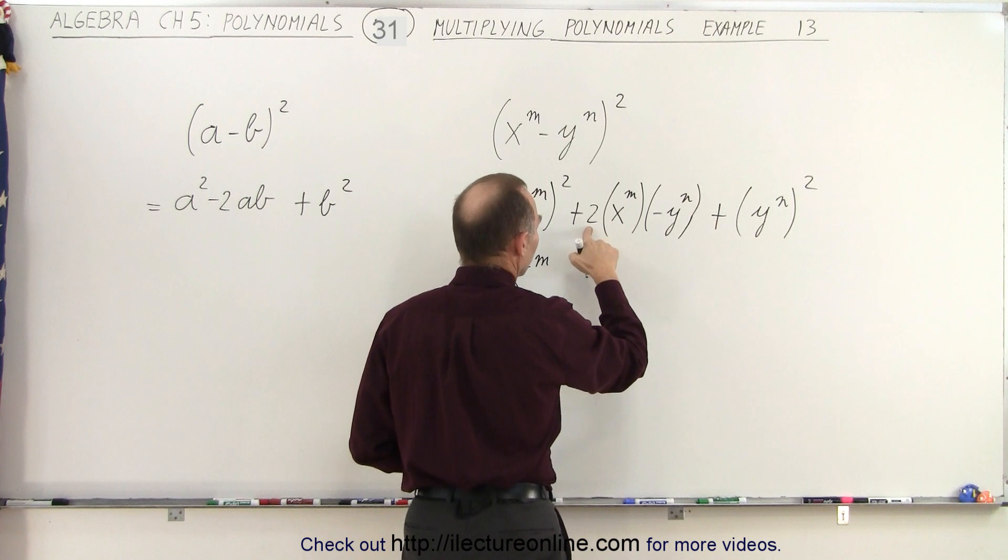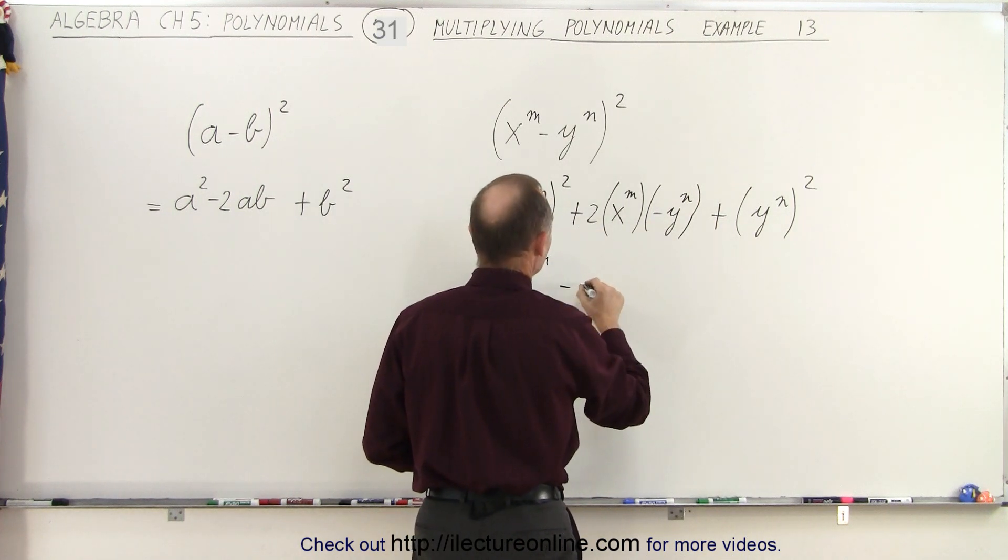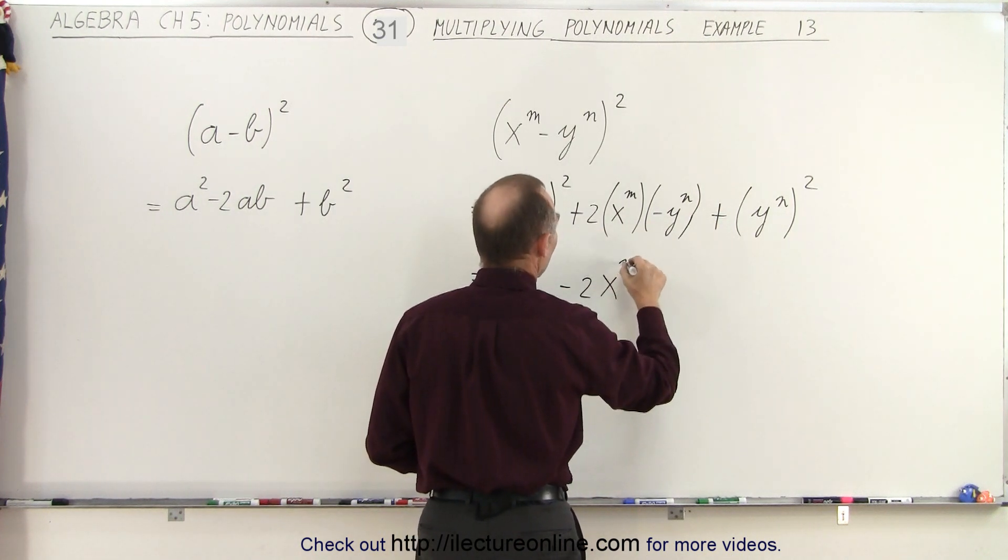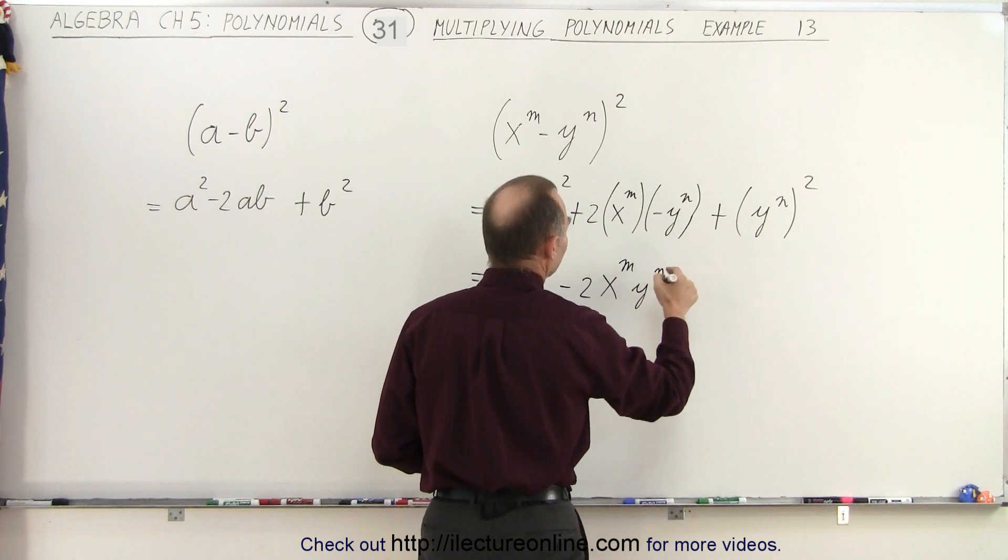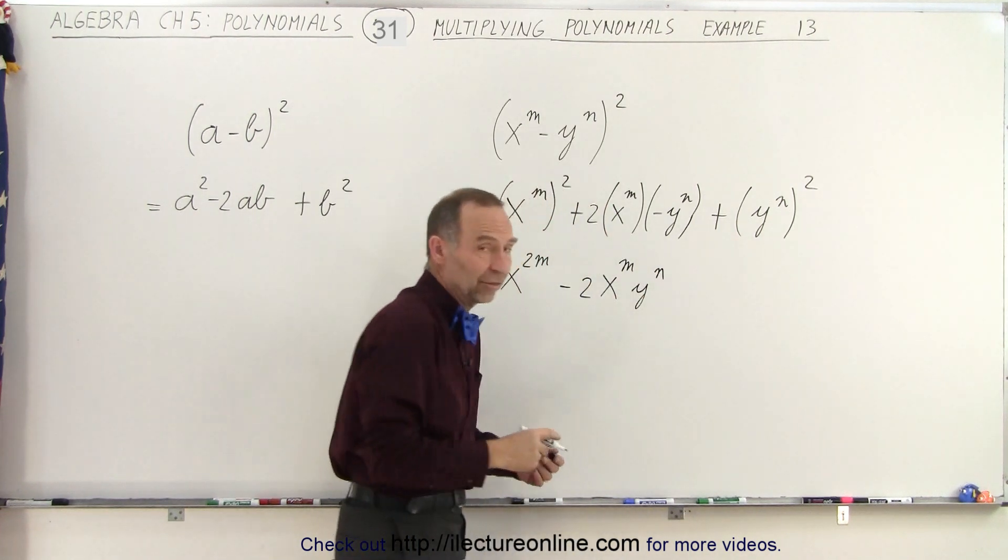Here we have a 2 and a minus 1, so that would be minus 2X to the M, Y to the N. We cannot add exponents here because the bases are not the same.